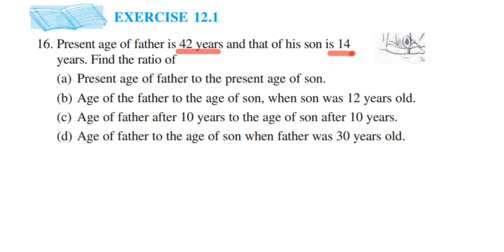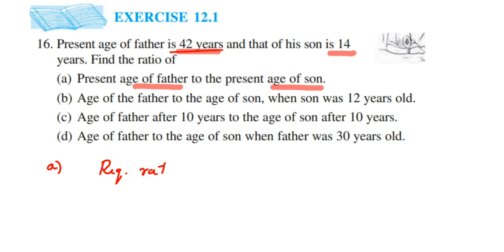The first question asks us to find the ratio of the present age of the father to the present age of the son. So the required ratio: the father's age is 42 and the son's age is 14. So 42 is to 14 will be the required ratio.